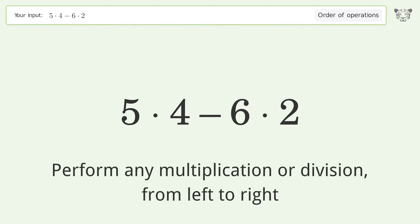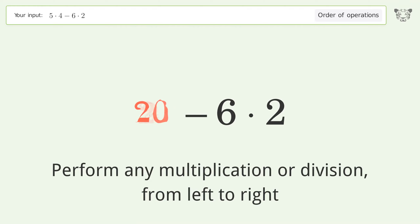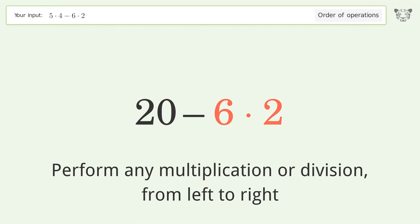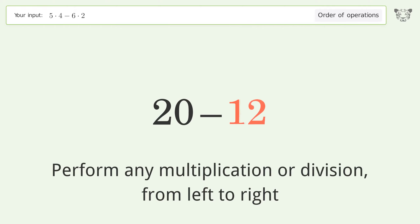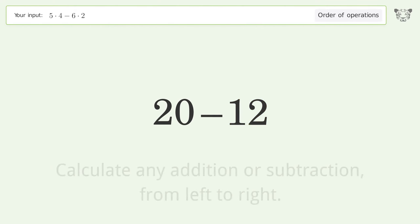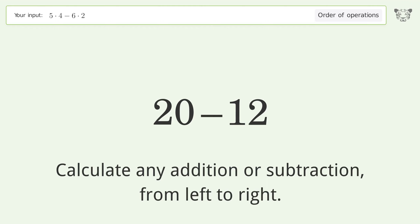Perform any multiplication or division from left to right: 5 times 4 equals 20. Then 6 times 2 equals 12. Next, calculate any addition or subtraction from left to right.